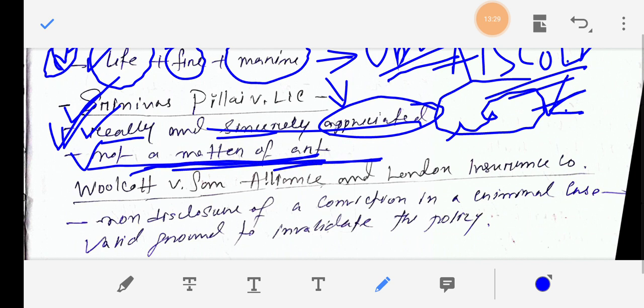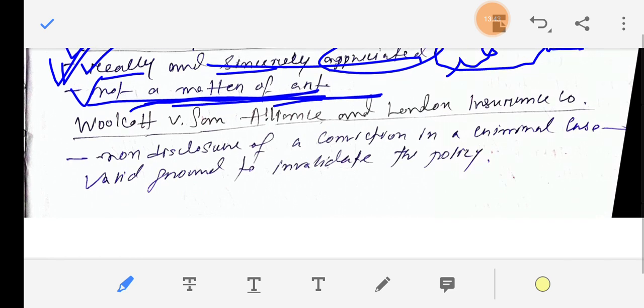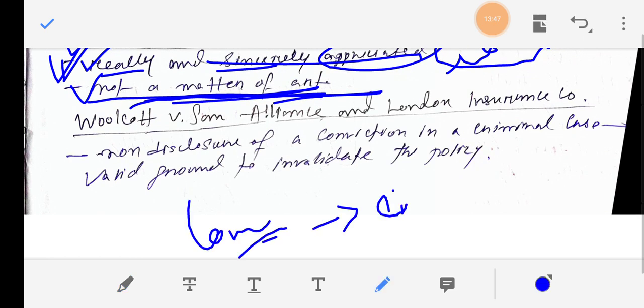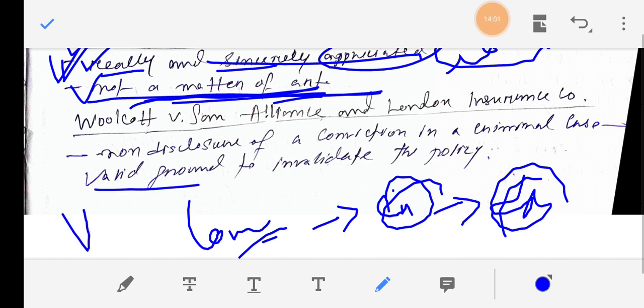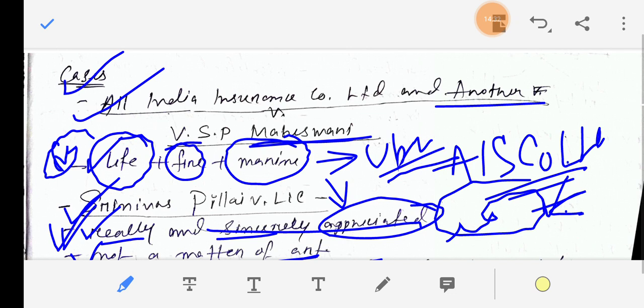Then another case, Woolcott versus Sun Alliance and London Insurance Company. It was held that non-disclosure of a conviction in a criminal case - convict means someone convicted - as a criminal case of the assured was a valid ground. It was a valid ground to invalidate the policy. This means the policy is not valid. The insurance policy has no liability. This is the case. So the case title is Woolcott versus Sun Alliance and London Insurance Company.